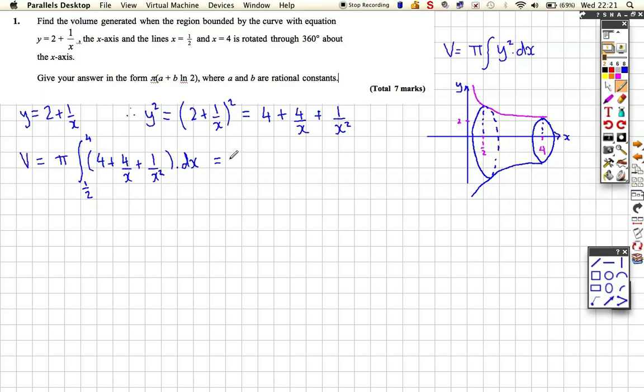And we've got to do it between the limits of half and the limits of 4. So let's see what we get. Leave pi outside, let's do some big square brackets. Integrate 4 with respect to x, that gives us 4x. 4 over x when you integrate that is 4 ln x. You should know that, you should spot that pattern.